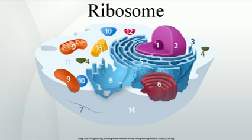Ribosomes are the workhorses of protein biosynthesis — the process of translating mRNA into protein. The mRNA comprises a series of codons that dictate to the ribosome the sequence of the amino acids needed to make the protein.